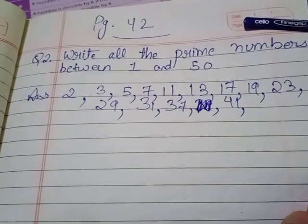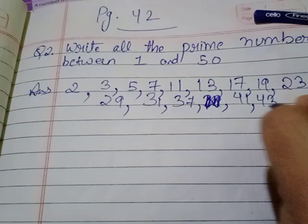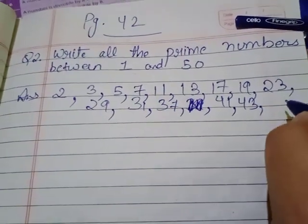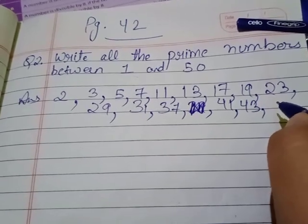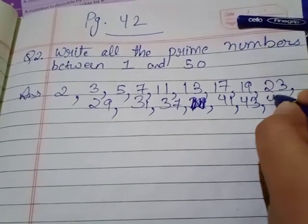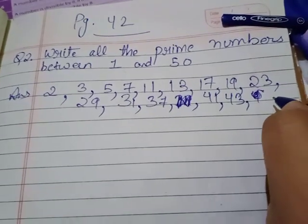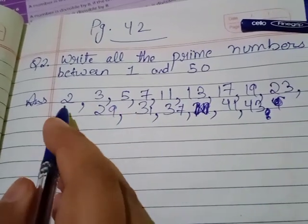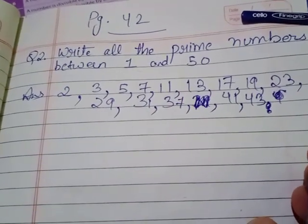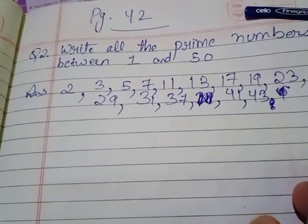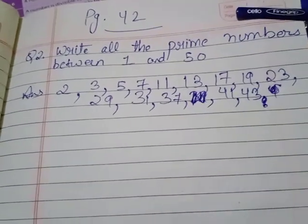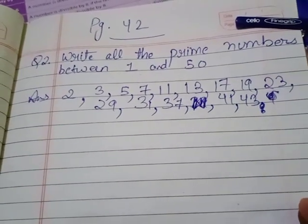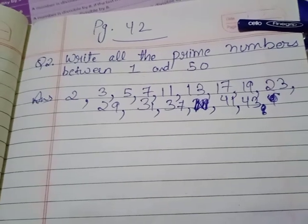Then 41 is prime, and 43 — keep in mind, we have to write up till 50. 45 is not, 46 is not, 47 is prime. 48 and 49 are also not prime. So all these numbers — 2, 3, 5, 7, 11, 13, 17, 19, 23, 29, 31, 37, 41, and 43 — are all the prime numbers up to 50. Is it clear? This is your question number 2, which is given on page number 42.